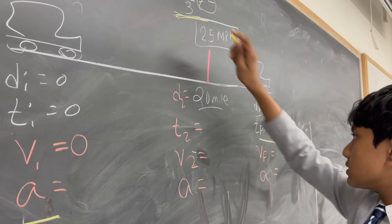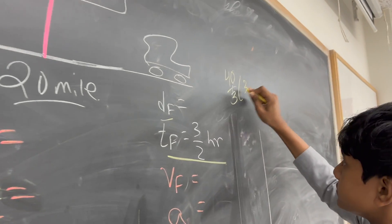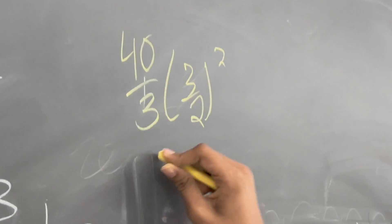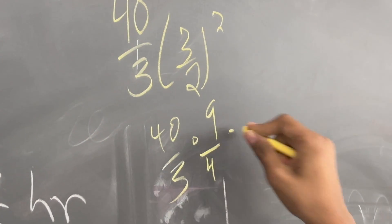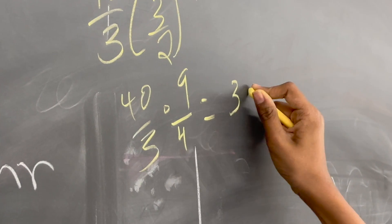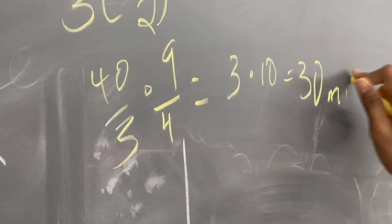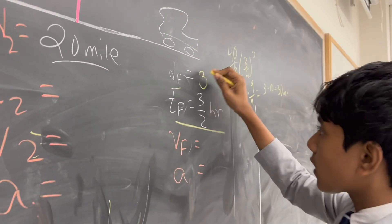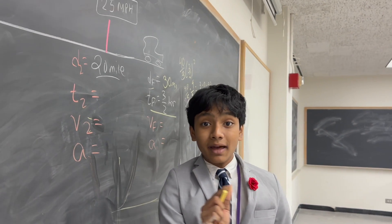That means D final is, well, let's plug 3 over 2 into our equation. I can't believe this used to be hard for me. So this gives us 3 times 10 equals 30 miles. So, great.